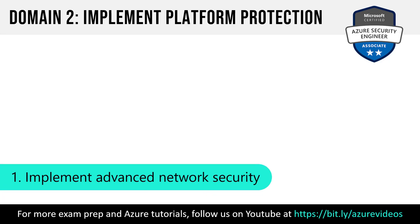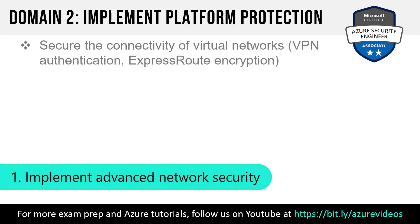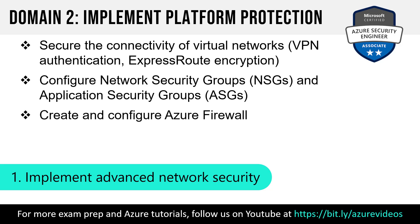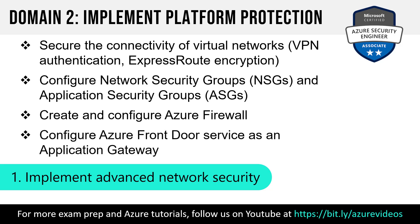Let's start with advanced network security. You may see questions around securing connectivity of virtual networks. That could include VPN authentication, express route encryption, maybe even VNet peering. Configuring network security groups and application security groups, which help in the NSG scenario, may come up. Creating and configuring Azure Firewall, and also configuring Azure Front Door as an application gateway.